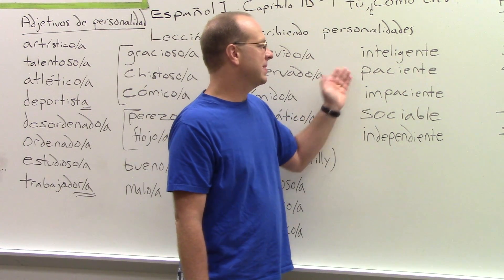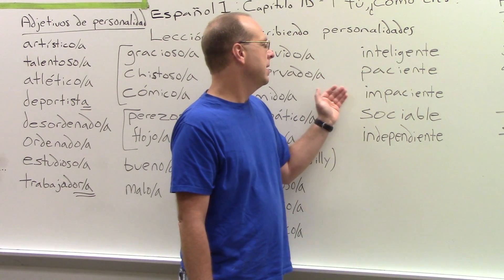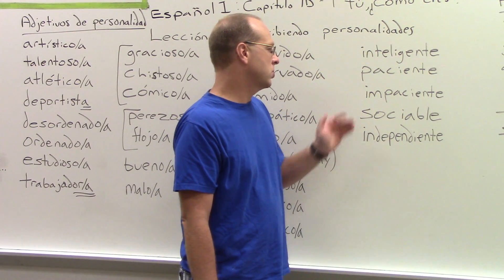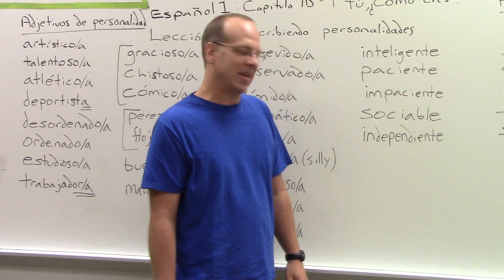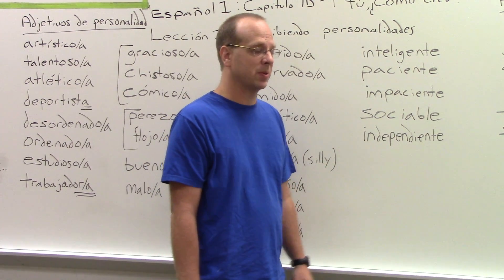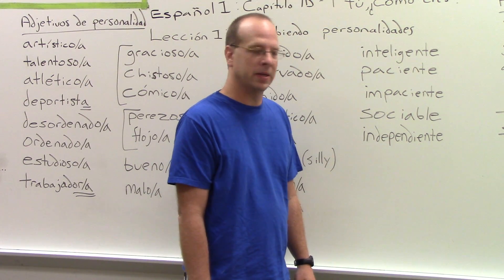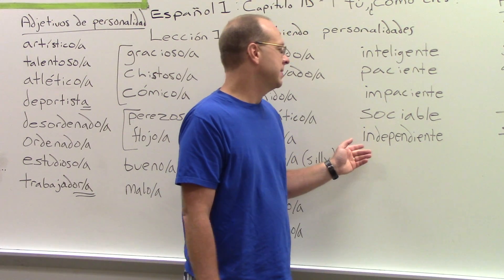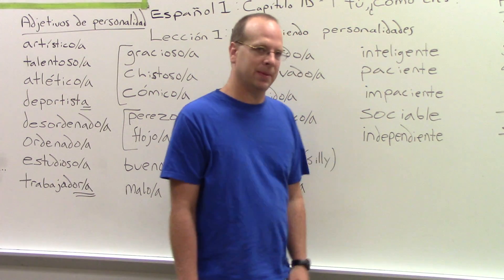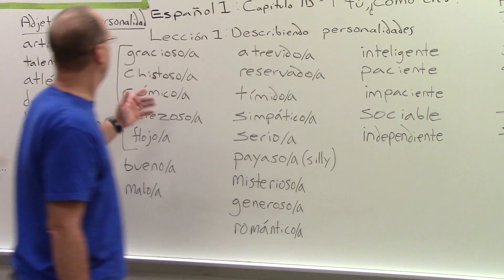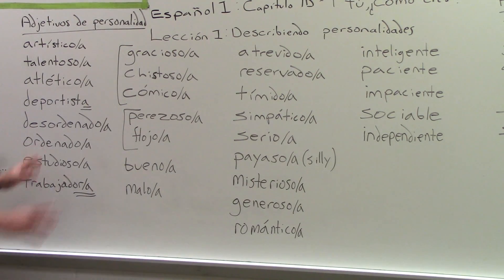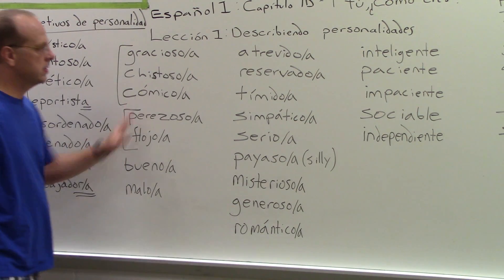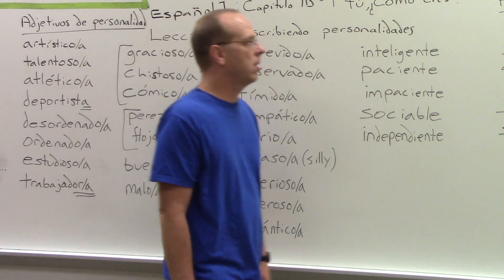Inteligente. Paciente. Impaciente. Sociable. Independiente — a lot of people say independente, but it's independiente. And that is the initial vocab for this section; it's almost all of it. This is all describing how people are.